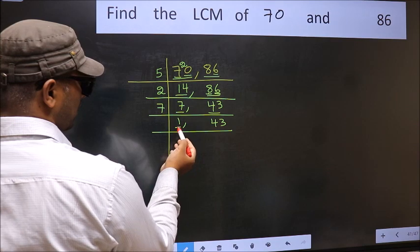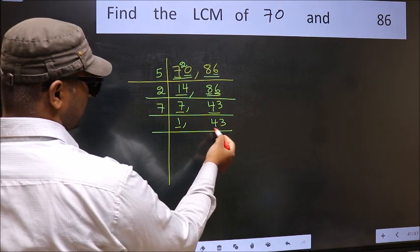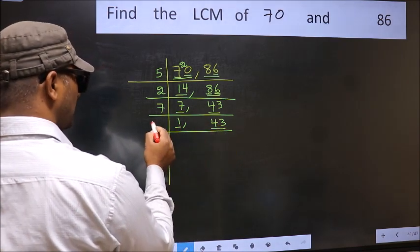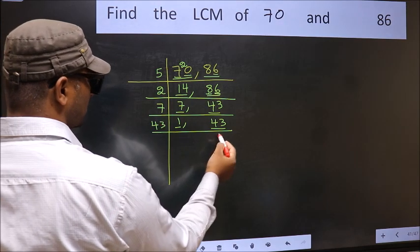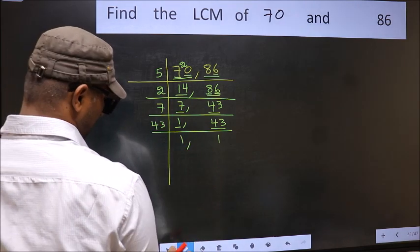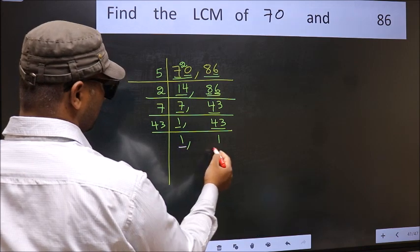We got 1 here, so focus on the next number 43. 43 is a prime number, so 43 once 43. So we got 1 in both places.